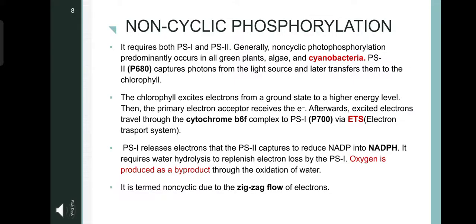Non-cyclic phosphorylation. It requires both photosystem 1 and photosystem 2. Generally, non-cyclic photophosphorylation predominantly occurs in all green plants, algae, and cyanobacteria. The pigment system 2 captures the photons from the light source and later transfers it to the chlorophyll. The chlorophyll excites the electrons from the ground state to high energy level. Then, the primary electron acceptor receives the electron which travels through the cytochrome B6F complex to pigment system 1 via electrotransport system.